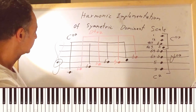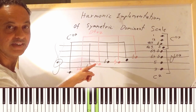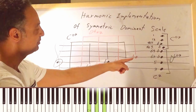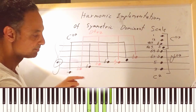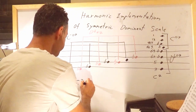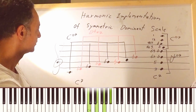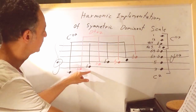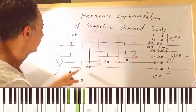The first dominant seventh chord is C, F flat (which is E natural harmonically), G, and B flat — the C7 chord. If we go a minor third up to E flat, look what we have: E flat, G, B flat, and D flat — we have the E flat seven chord.